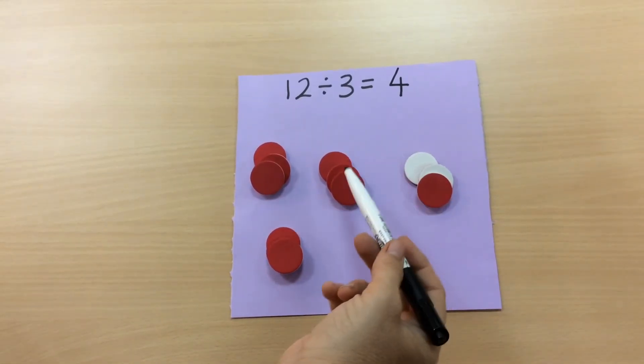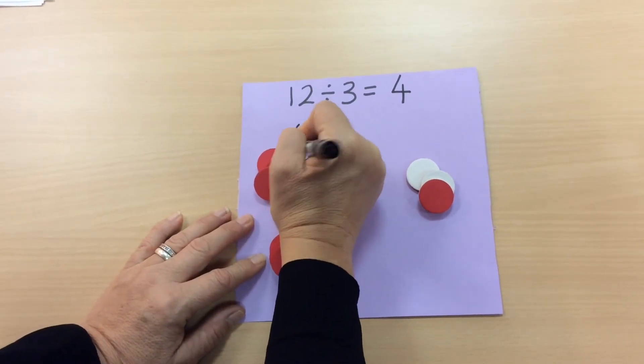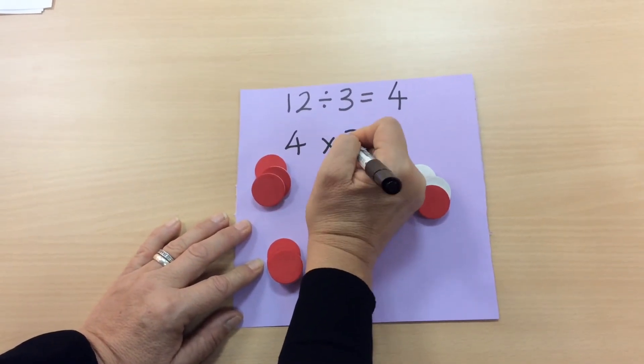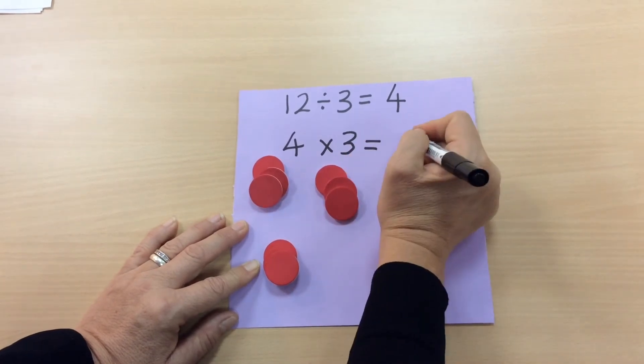one, two, three, four groups of three in each group and the answer is 12.